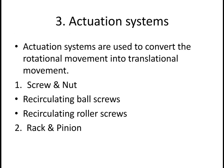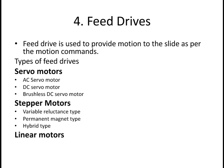Actuation systems are used to convert rotational motion into translational motion. Translational motion is the to-and-fro motion. It includes screw and nut mechanisms, recirculating ball screws, recirculating roller screws, and rack and pinion.